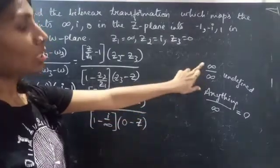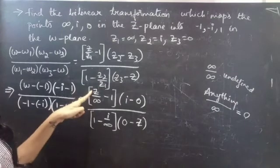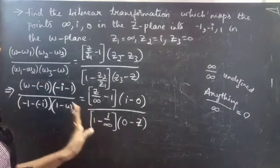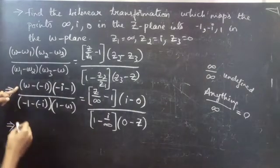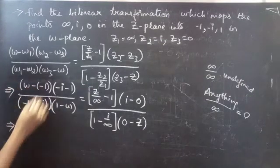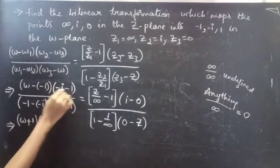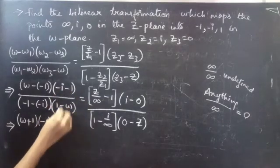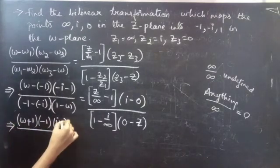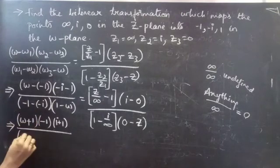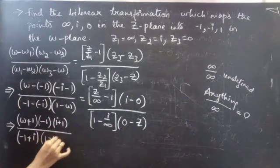Applying the rule that anything except infinity divided by infinity is 0: z/infinity = 0 and i/infinity = 0. So the right-hand side simplifies. On the left-hand side, we take minus common since we have minus in two terms, giving minus 1 times (i + 1).